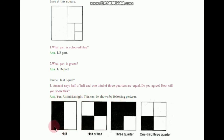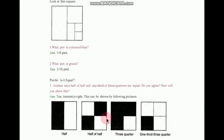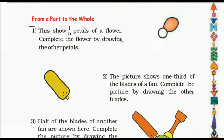This is two half parts, and half of half is this part. So we have made four parts, and from half of half we made two parts here and two parts here. And here three quarters — from out of three quarters we have made one third part. This is one third part. So these all are equal.